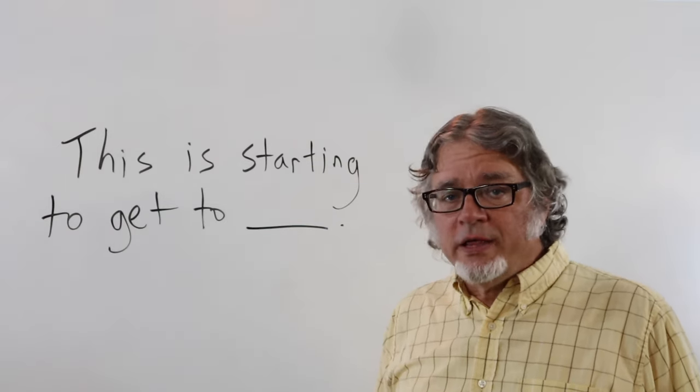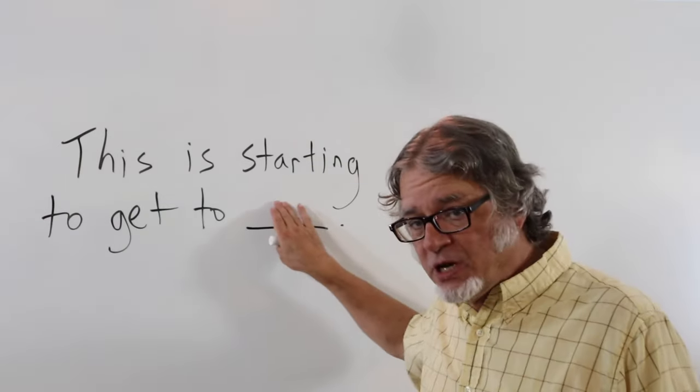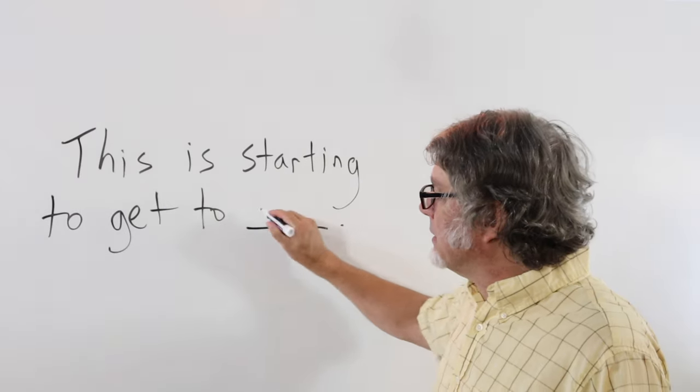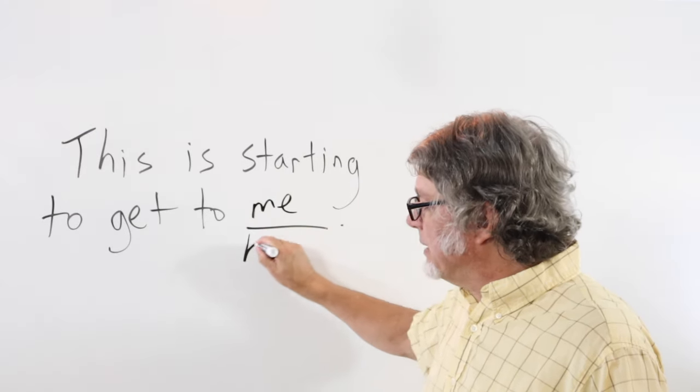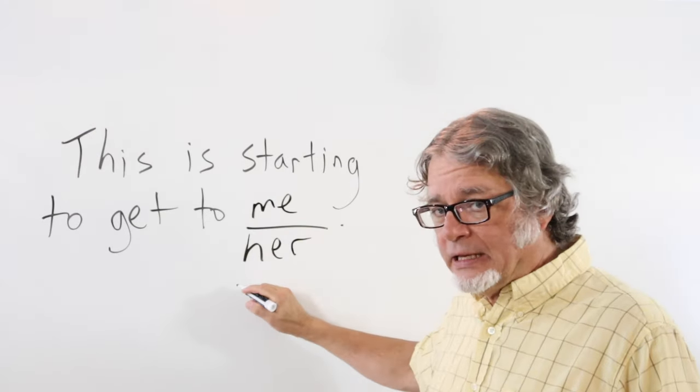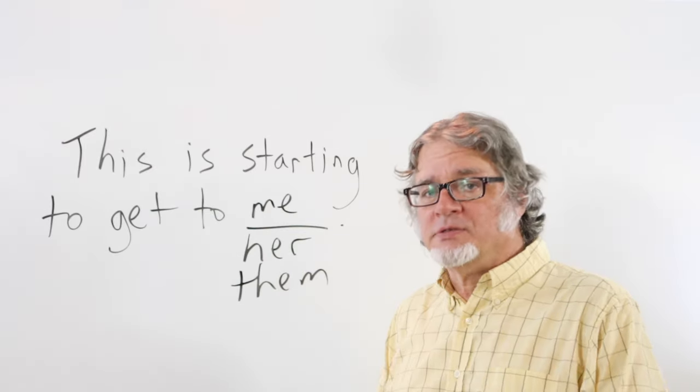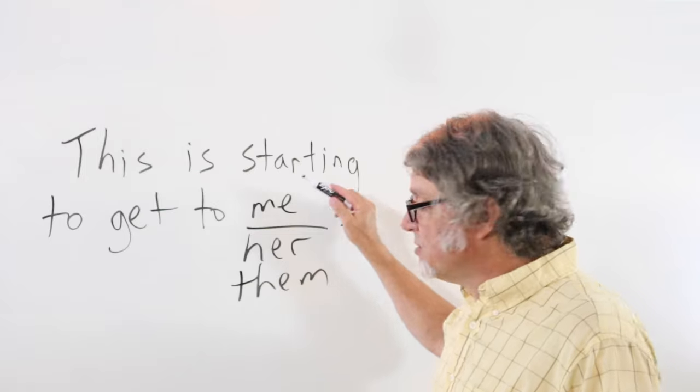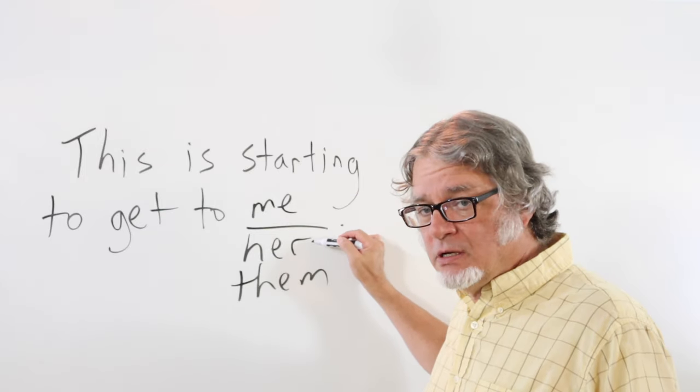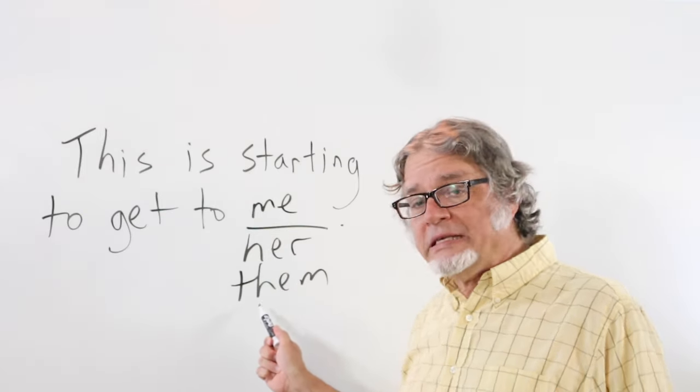This is starting to get to, and then here's the object pronoun. Get to me. Get to her. Get to him. Get to them. This is starting to get to me. This is starting to get to her. This is starting to get to them.